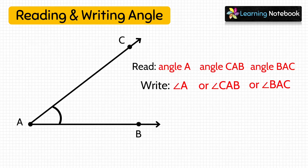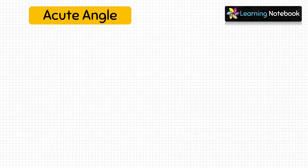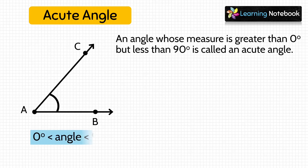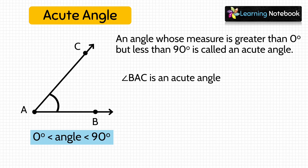Now we have understood what is an angle and how to read and write angles. So let's learn the types of angles. First is acute angle — an angle whose measure is greater than zero degrees but less than 90 degrees is called an acute angle. Here, angle BAC is an acute angle because its measure is greater than zero degrees but less than 90 degrees.